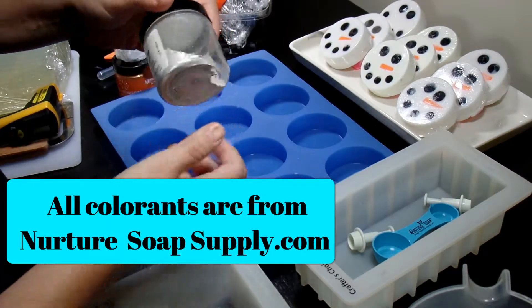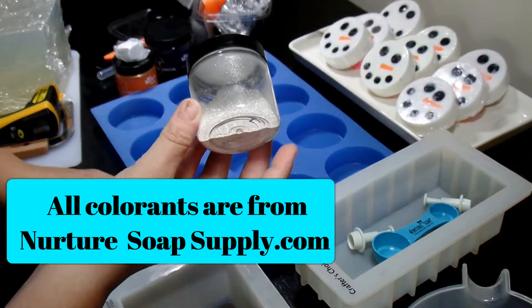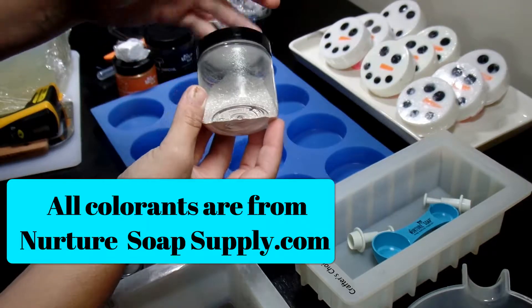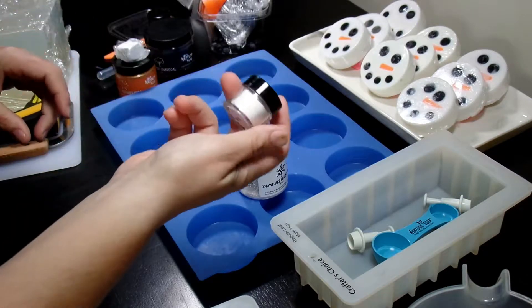As far as colorants go, I have Snowflake Sparkle mica. This is beautiful. I just added this to my white base to bring out just a little sparkle, the twinkle of the snow for the snowman head.